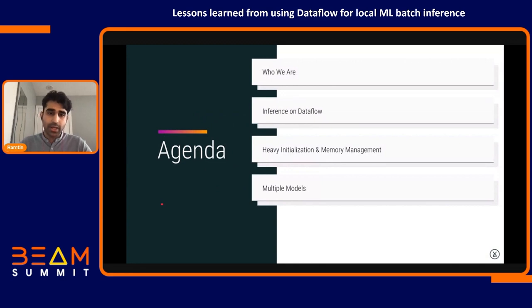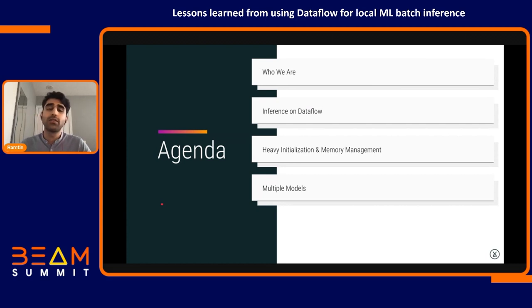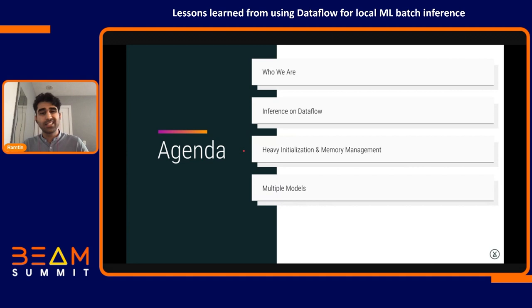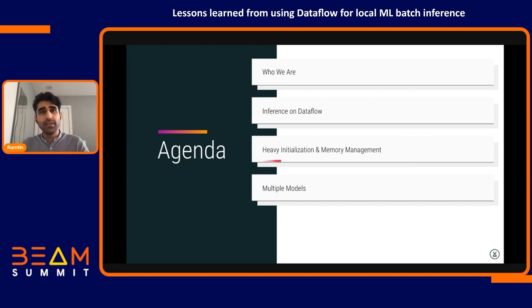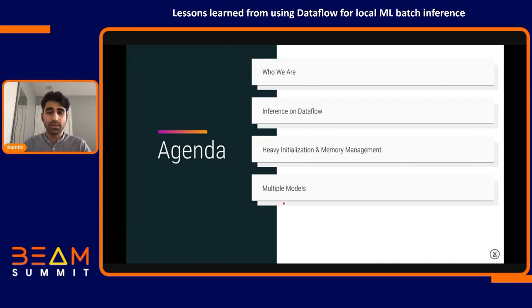I'll start with a quick introduction to who we are and what we do. Then I'll provide some context for inference on Dataflow and how it helped us to do high-throughput inference jobs on our deep learning models. Finally, I'll explain some of the challenges we faced during this journey and how we tackled them, including heavy initialization, memory management, and extending inference on Dataflow to multiple models.